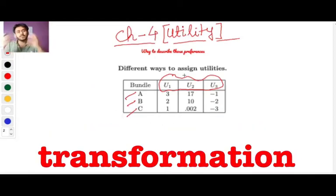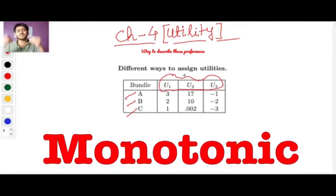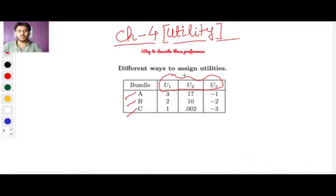There is a special transformation of utility function known as monotonic transformation. Over here you see there is no proper relationship between these numbers, but let's say I made another utility function, u bar, and gave it 6, 4, 2. Now you see these numbers are essentially twice of u1.